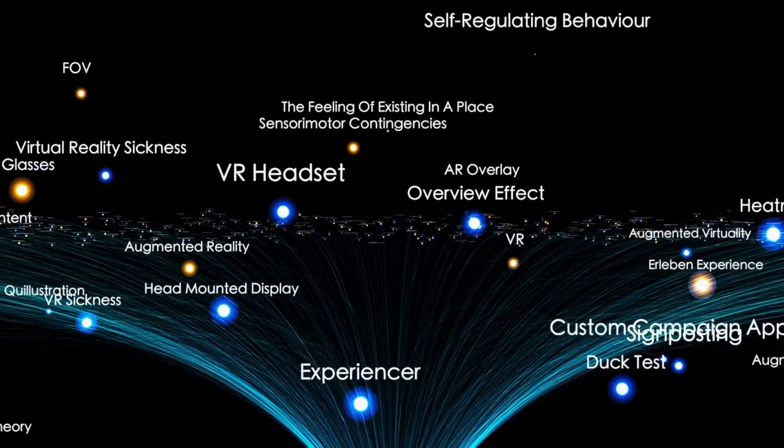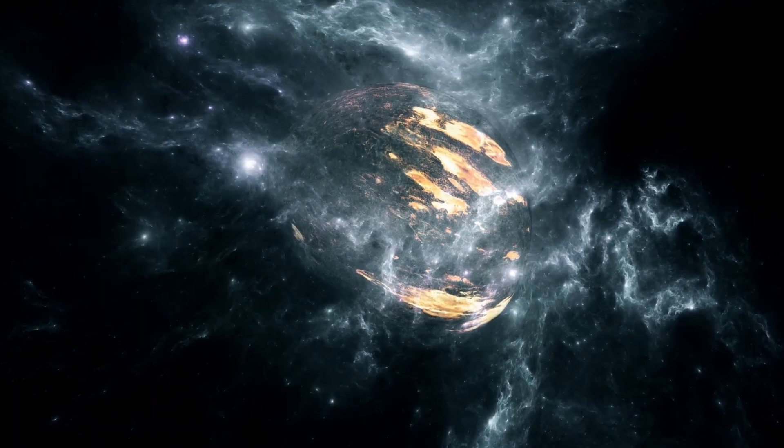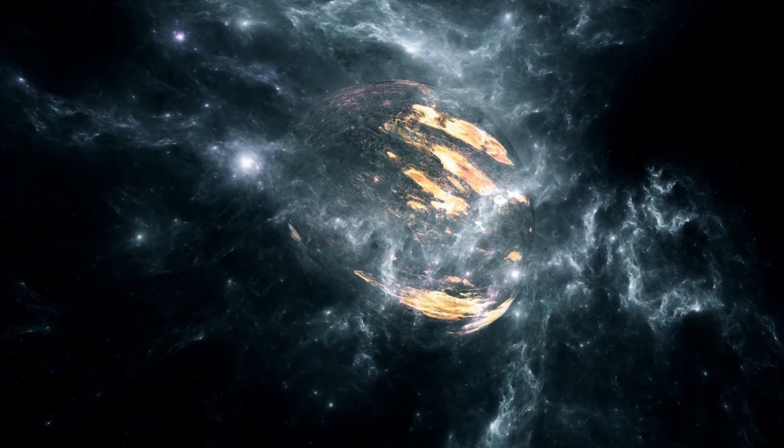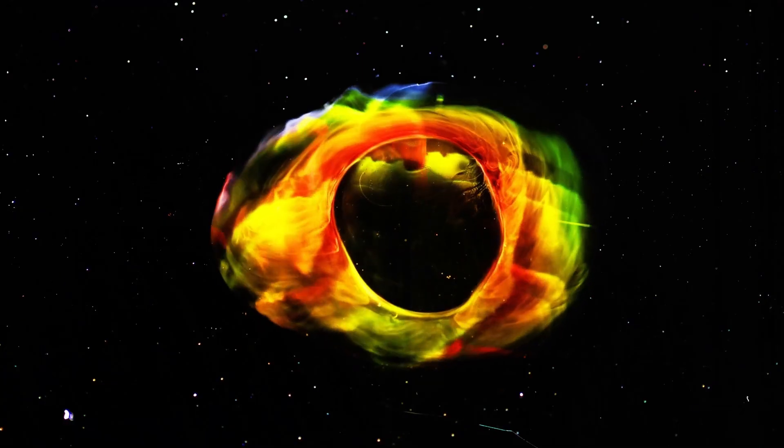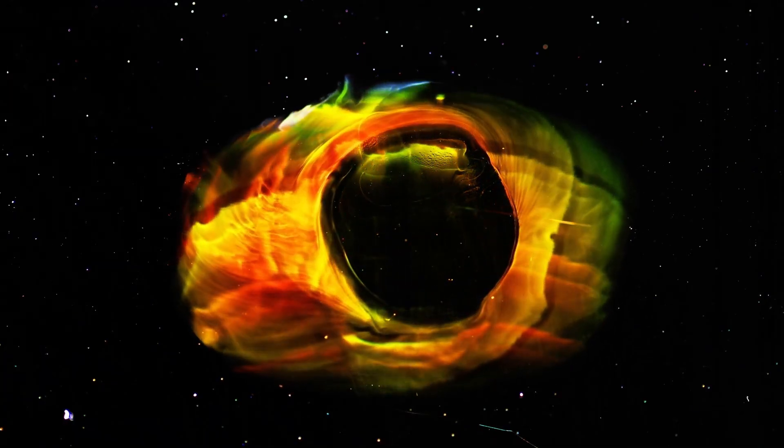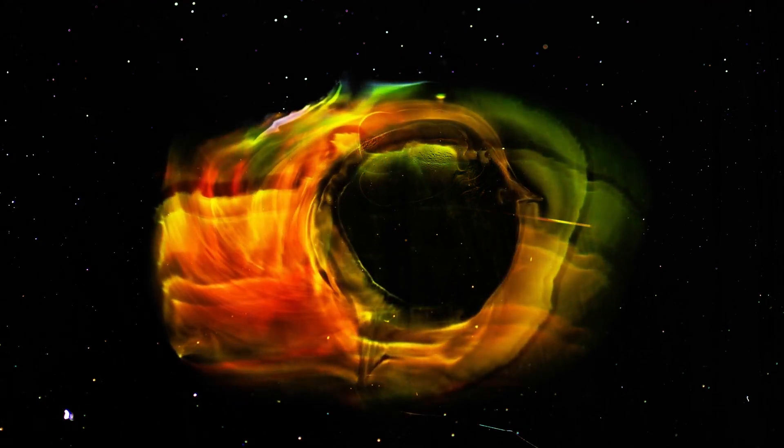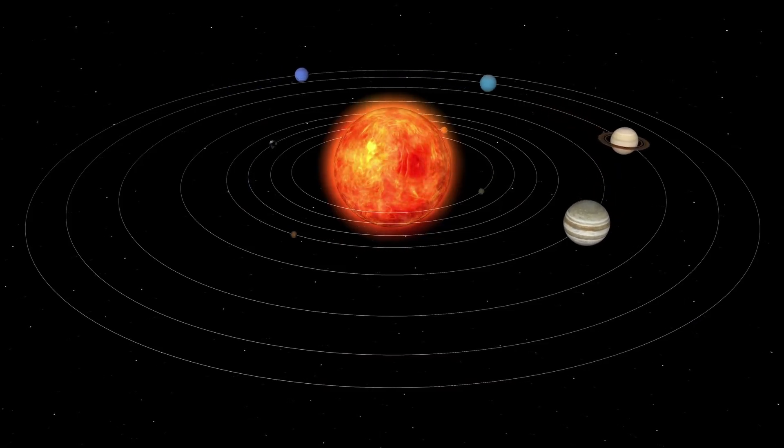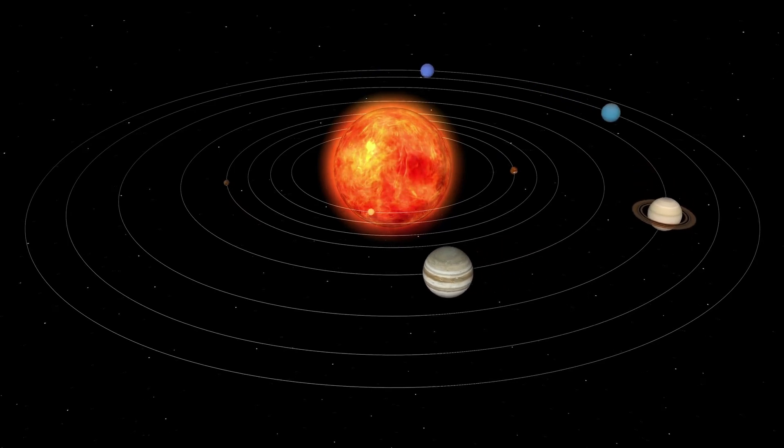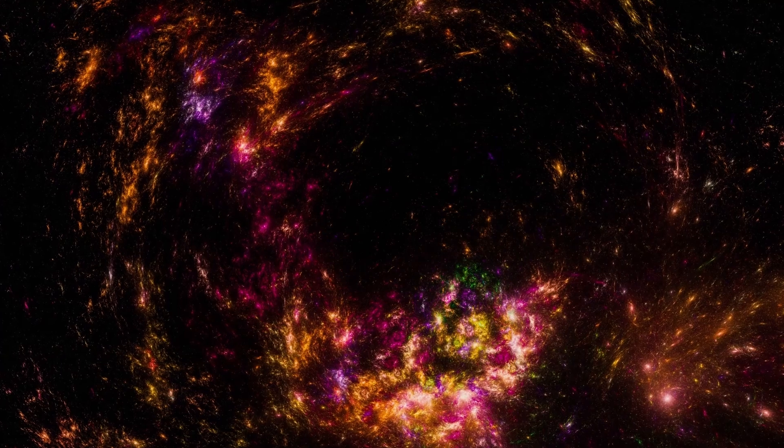If Betelgeuse were to go supernova, it would produce a cosmic light show visible even in daylight for weeks or months. The explosion would release more energy in a few seconds than the sun will emit over its entire 10 billion year lifetime. This explosion would emit electromagnetic radiation, including visible light, X-rays and gamma rays. But due to its distance, over 267 trillion miles, it poses no direct threat to Earth.